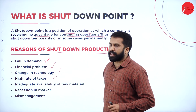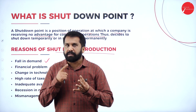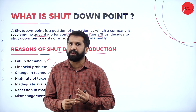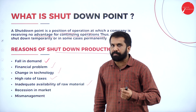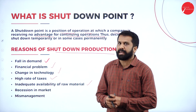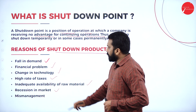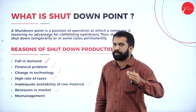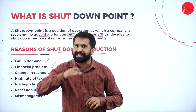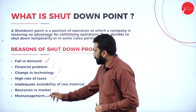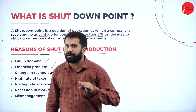High rate of taxes — sometimes your income is high but after paying tax, what remains must cover all partners, dividends, and many other expenses. Inadequate availability of raw materials — you want to manufacture, but there are no raw materials available; that is also a reason for shutdown. Recession in the market — for a particular unit, there is no demand. For example, a mobile phone with certain features may face recession if another brand offers the same features at a lower price. Mismanagement — in case of mismanagement, you are also supposed to shut down your company.